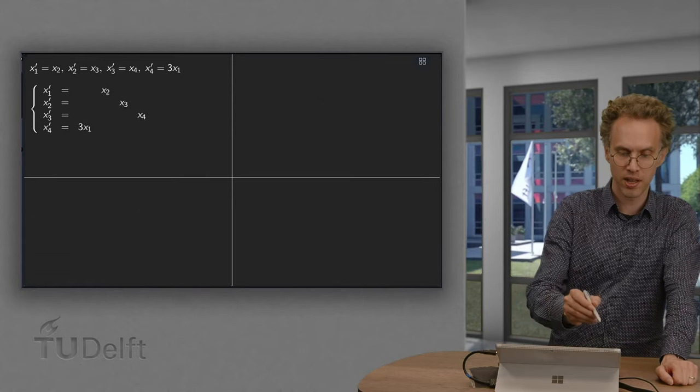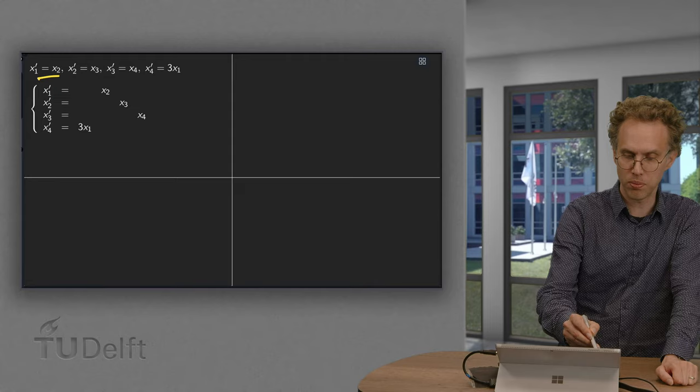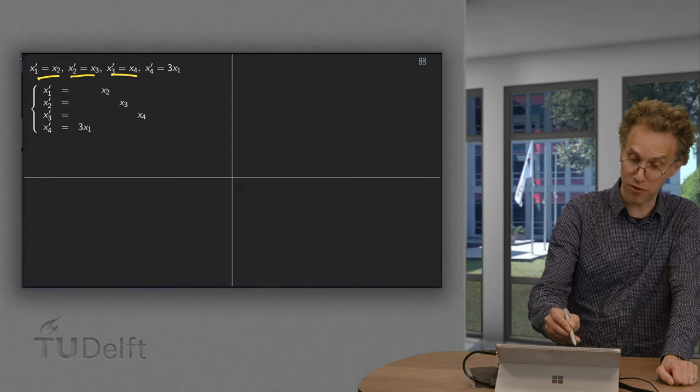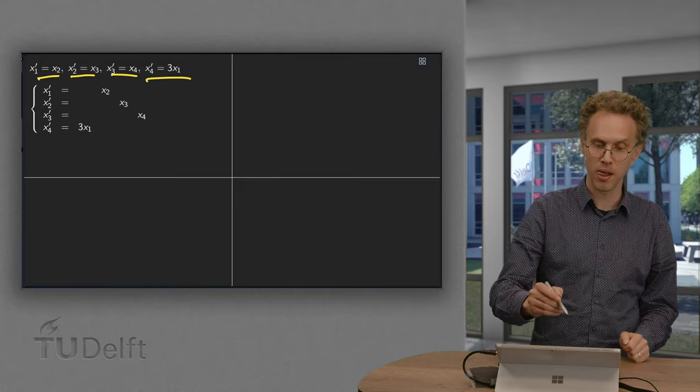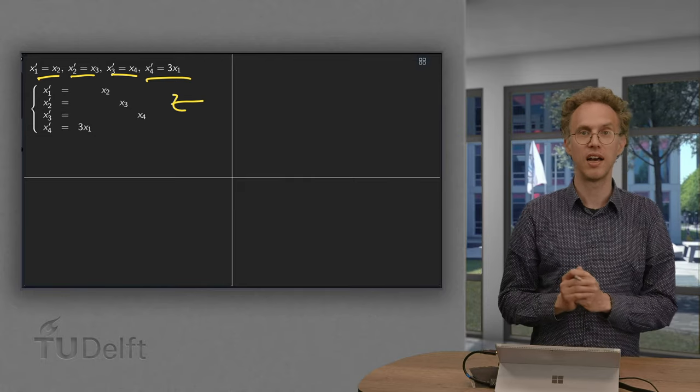So, summarize the results here. x1 prime equals x2. x2 prime equals x3. x3 prime equals x4. And x4 prime equals 3 times x1. Or we can write them in the system like this.